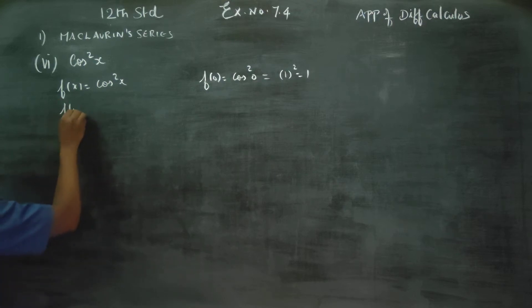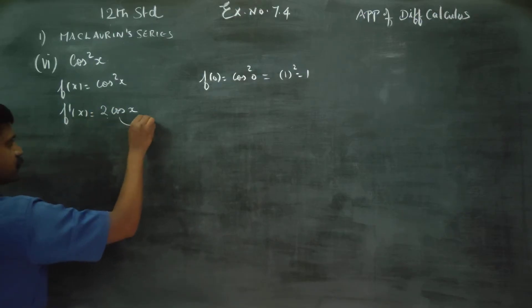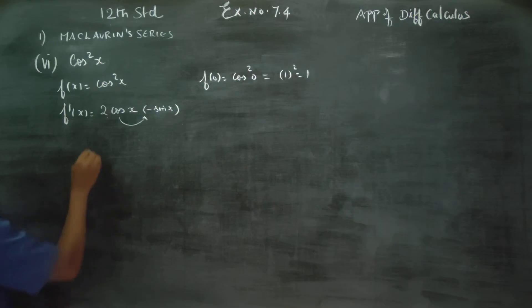After this, you have to find f dash x. Differentiate using the power rule. 2 comes out, becomes 2 cos x. Chain rule, differentiate cos x to get minus sin x. Therefore, this equals minus 2 sin x cos x, which is a ready-made formula, sin 2x. This is my f dash x.